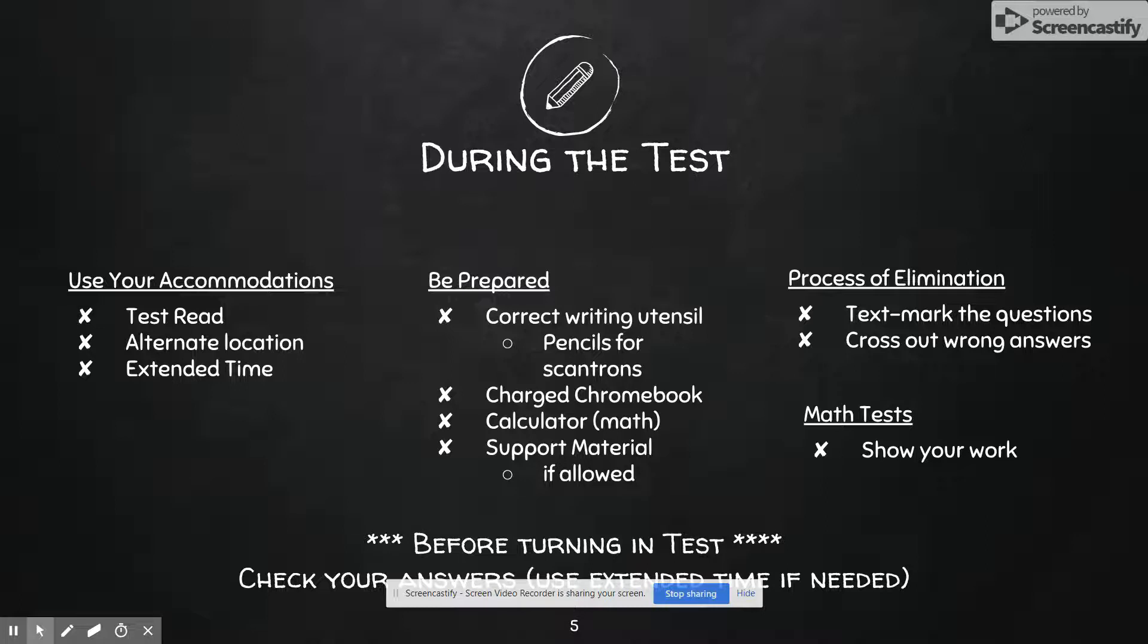Come to your test prepared. Have the correct writing utensils. So if your class is doing a multiple choice test on Scantron, you need to have a pencil. You cannot write a pen or it will not work. Have a charged Chromebook. Don't waste your class time having to run to tech and getting a charged Chromebook because that is not a good use of your time. If it's math, have your calculator. And then if there's supportive material, have that as well. So if you have an essay and you're allowed to have a note card, have that. If you're allowed to have a fact sheet for math, make sure that's in your folder.